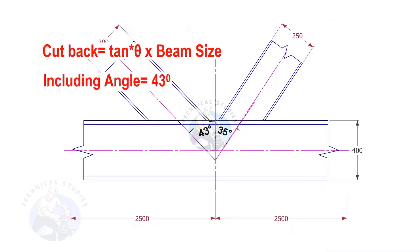If the including angle is 43 degrees and the size of the beam is 300, the cutback is tan 43 times 300.